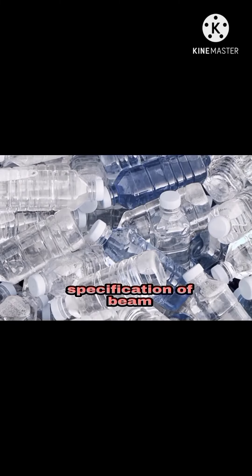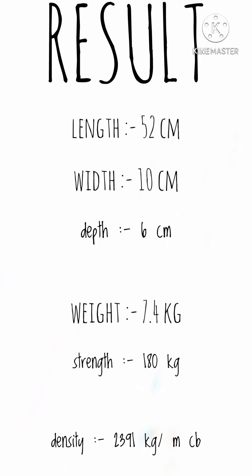Specification of beam: In this beam I used some waste material like plastic bottles, and I did not use reinforcement. The length is 52 cm, width 10 cm, depth 6 cm, self weight 7.4 kg, strength 180 kg, and density 2391 kg per meter cube.